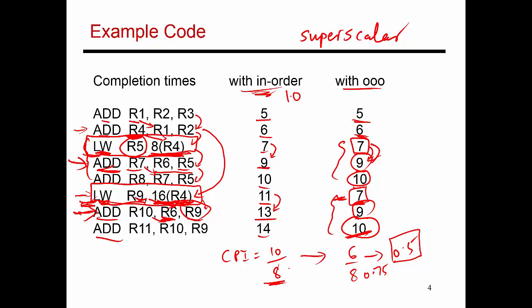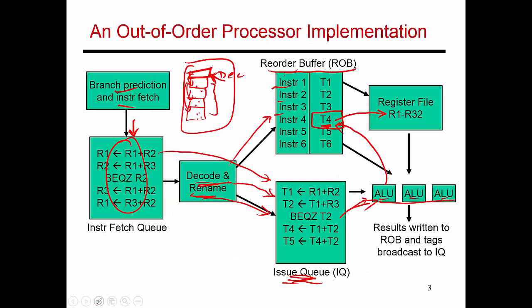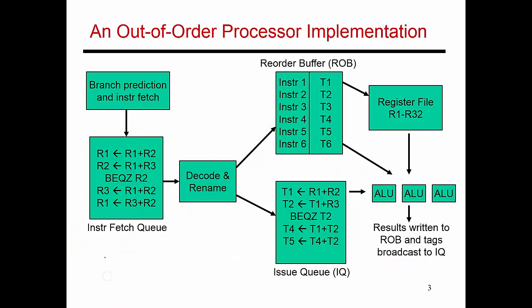So now that I've gone through this example and you've seen how out-of-order execution is used to do multiple things in parallel and reduce stall cycles, let's go back to this design here and walk through the many details and make sure that we understand all of them.